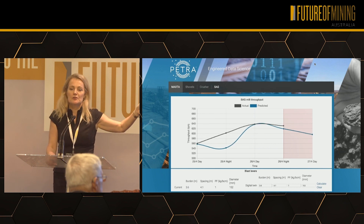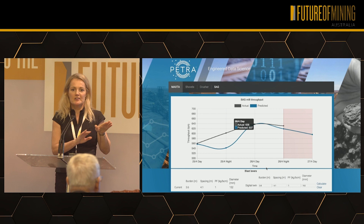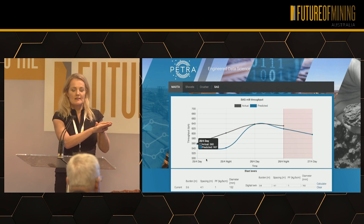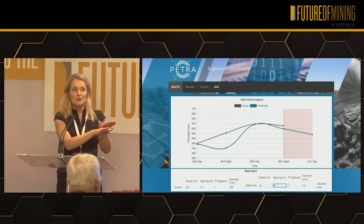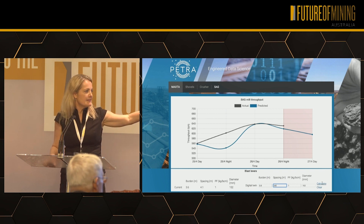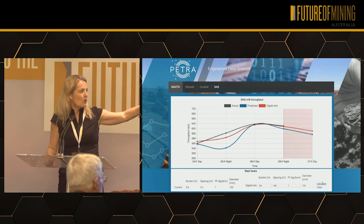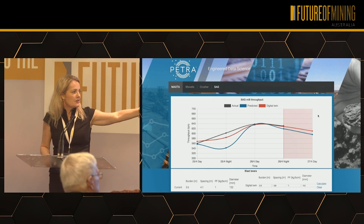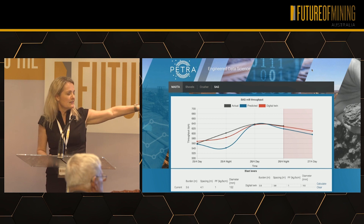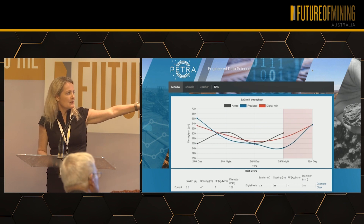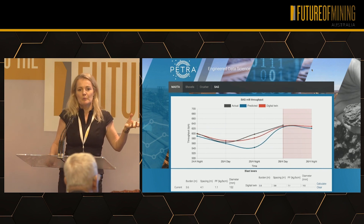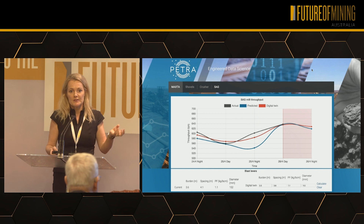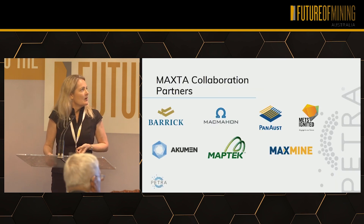This is our drill and blast simulation. I'm showing predicted versus actual — so when you're doing a simulation you can see that the underlying model is reasonably accurate. Then we change the burden and spacing down the bottom using historical data, and we can see what effect that would have. On average, if you reduce burden and spacing in that particular geology, you get a slight uplift in SAG mill throughput. This is all driven by complex geology — there would be around 20 different intrinsic rock properties driving every one of those predictions.